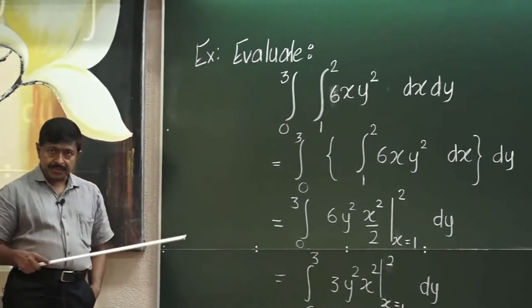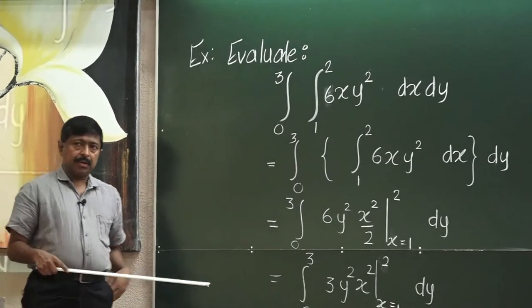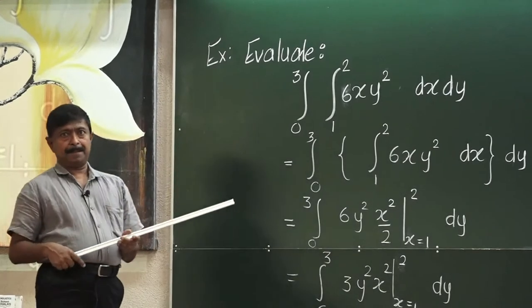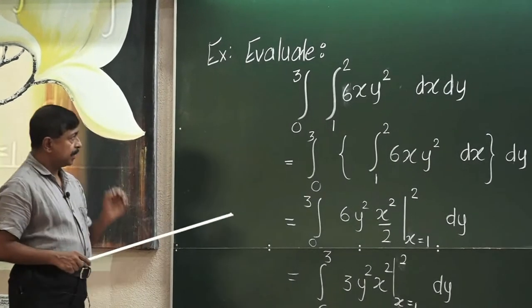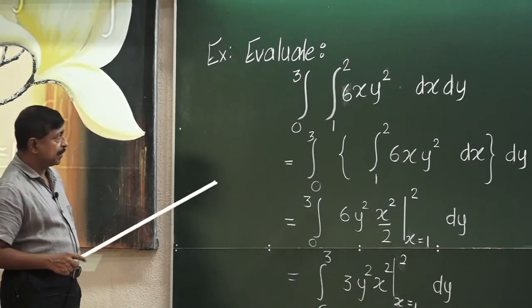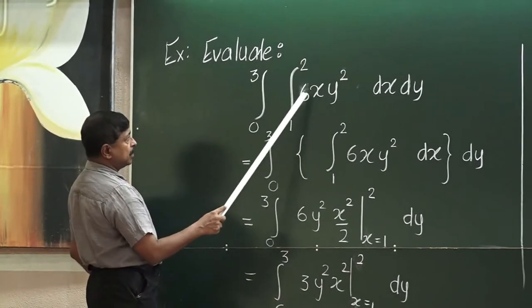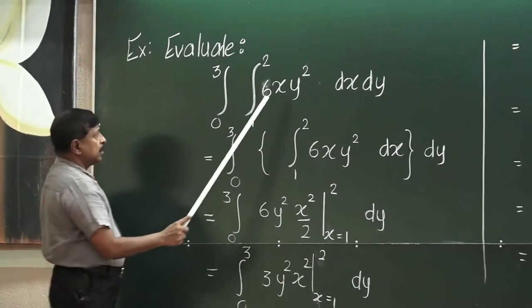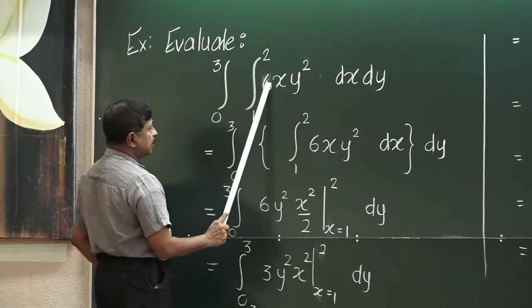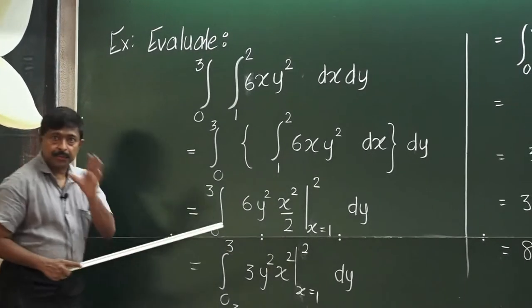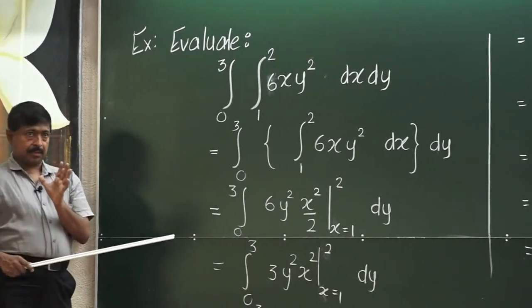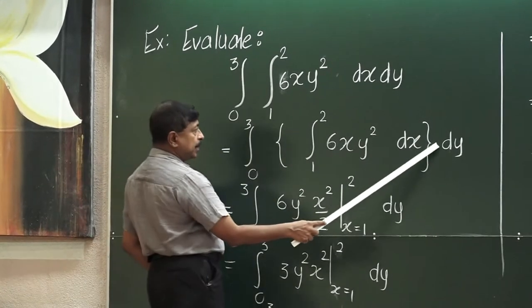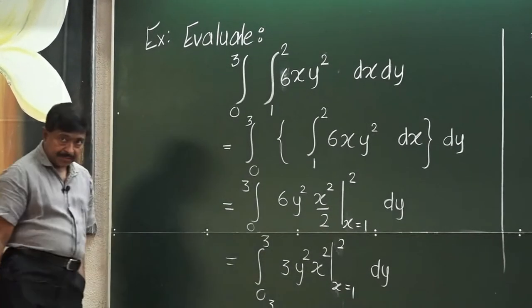The evaluation process is very similar to the opposite of the partial derivatives — exactly the opposite of partial derivatives because here you have two variables. You bracket this first so that the process is easier. For the sake of clarity, you can introduce a pair of brackets.